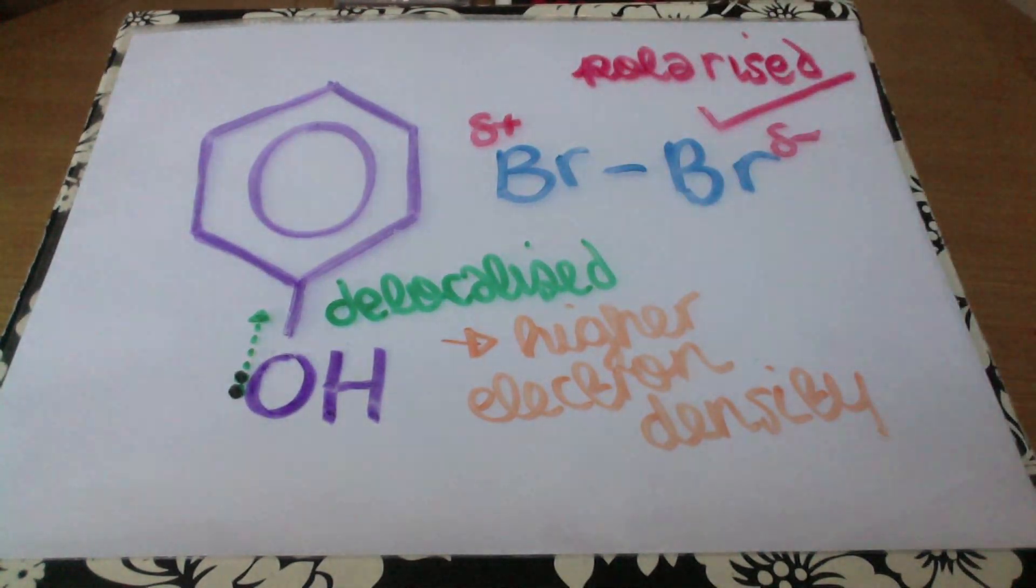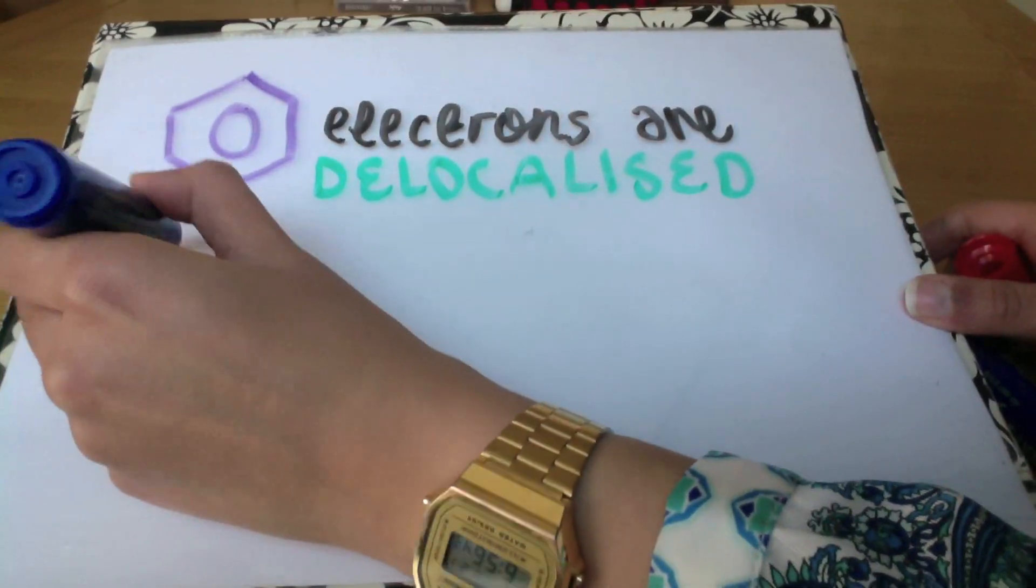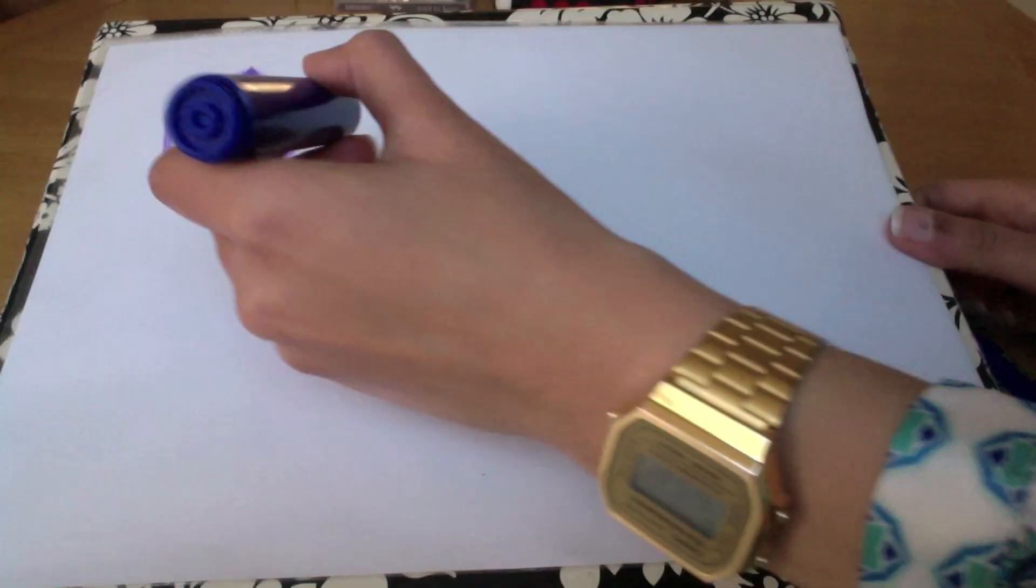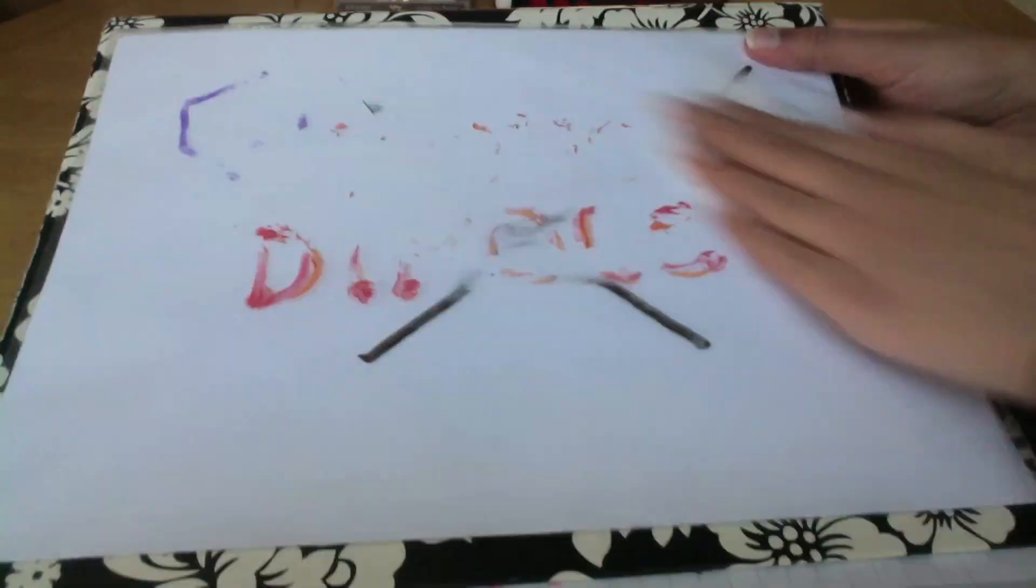So once again, the main points to cover are that benzene has a low electron density because the electrons are delocalized in the pi cloud. Therefore, it's unable to induce a dipole in a bromine molecule and requires a catalyst.